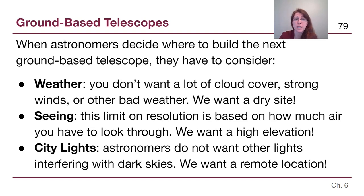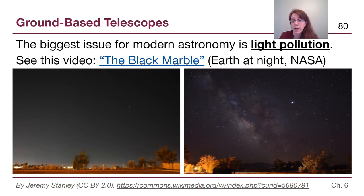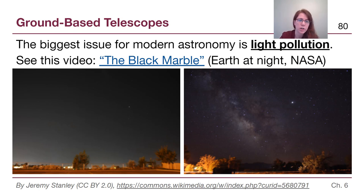Light from nearby cities can bounce off the atmosphere and wash out objects we're trying to observe. A pair of images taken by Jeremy Stanley shows just how big a difference this makes — one taken in a suburb of a major city and one taken further out in the country. In the suburban image we can see one bright star and maybe a couple of others, while the rural image actually shows the Milky Way, the disk of our galaxy in the background.